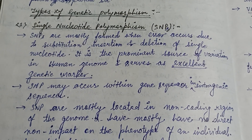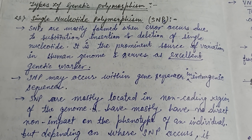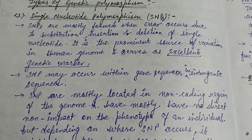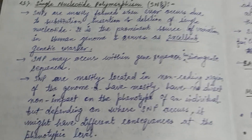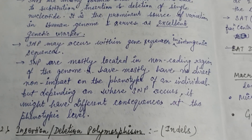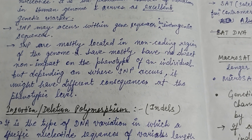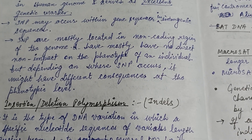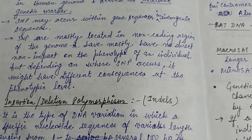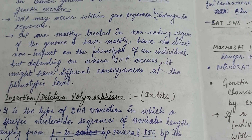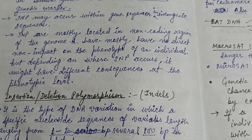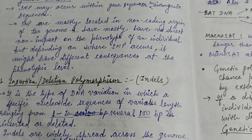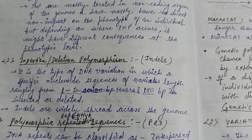The first type is single nucleotide polymorphism (SNP), in which deletion, insertion, or substitution occurs within a single nucleotide. It is an excellent genetic marker, generally located in the intragenic sequence or within-gene sequence and non-coding regions. It generally has no direct impact on the phenotype of an individual.